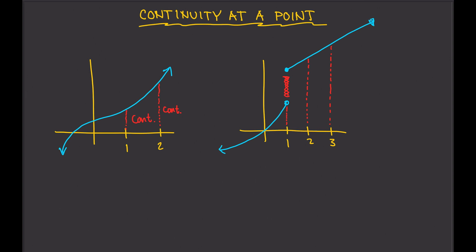Now, instead of a jump, let's say that here there's a hole at x equals 3 — meaning there's nothing there. If you ask, is the function continuous at x equals 3, the answer is no, because there was a hole. The function was broken at that point, so that's not continuous. Again, a function is only continuous at a point if the function didn't break at that point — no hole, no jump, nothing weird happening. That's what continuity at a point is all about.